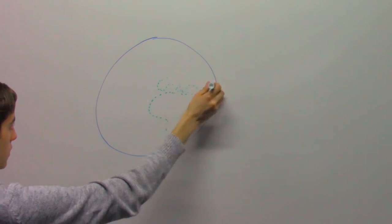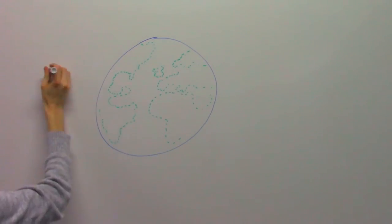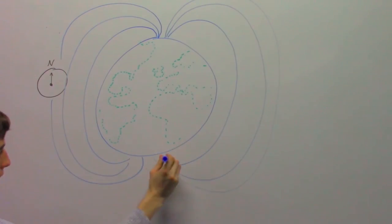For centuries, people have used compasses to help with navigation because they always point north. This is caused by the Earth's magnetic field. It exists at every point on the surface of the Earth and compasses align with it.